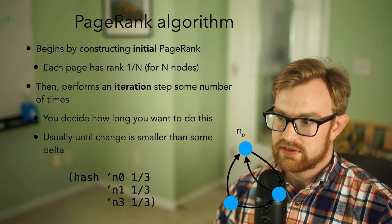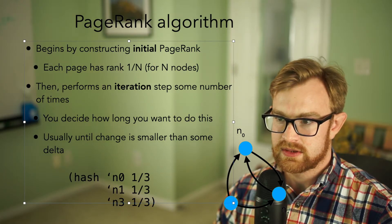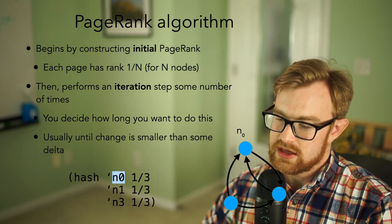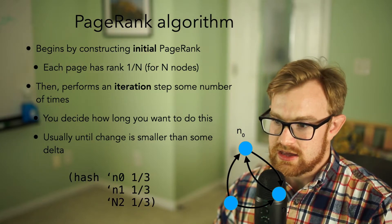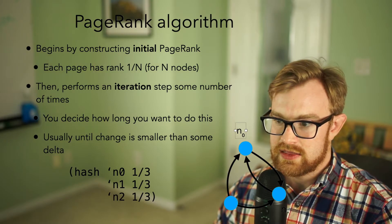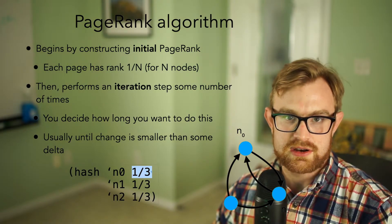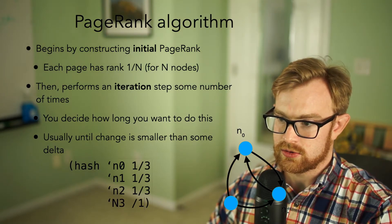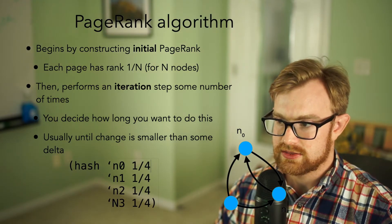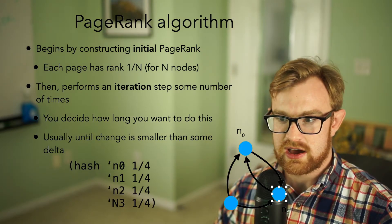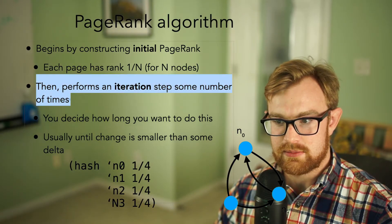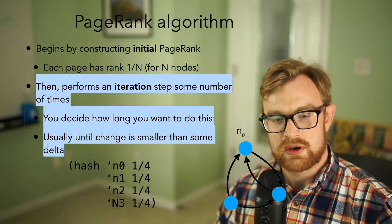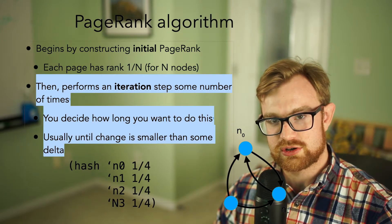The PageRank algorithm first computes an initial PageRank by taking the graph and setting every node equal to one divided by the total number of nodes — so for a three-node graph each gets one-third, and for a four-node graph each gets one-fourth. Then it performs an iteration step repeatedly. You run the PageRank step until it converges, getting a more and more precise result that approaches the true answer.